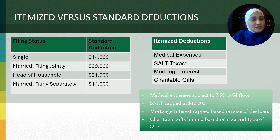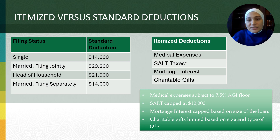Many families and individuals will likely take the standard deduction rather than itemize. If you took the standard deduction in 2023, you might want to consider whether bunching charitable contributions and certain expenses like medical expenses and property taxes into one tax year would allow better itemization.